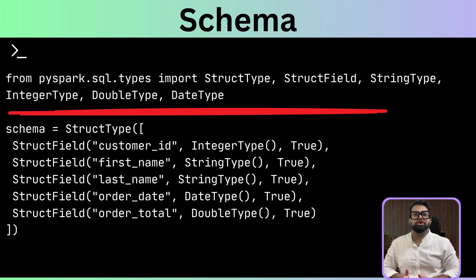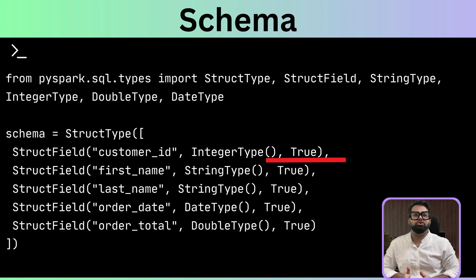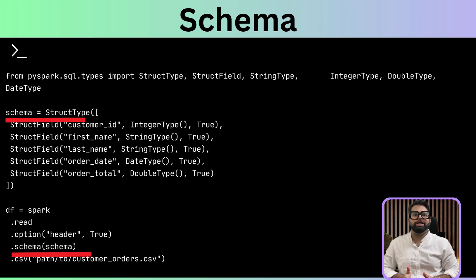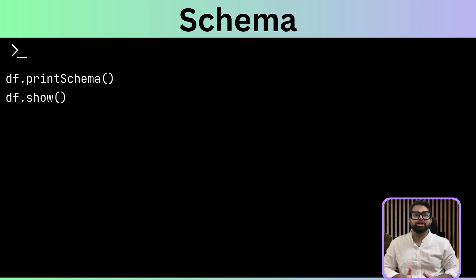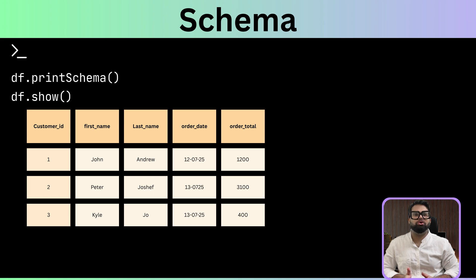A much safer and highly recommended option is to define the schema yourself. An explicit schema is like a contract for your data — it forces the data to be loaded in the exact format you expect. We import all the data types we need: StructType defines the whole DataFrame structure, and StructField defines one column. For each column, we give it a name, a data type like IntegerType or StringType, and a true or false value to indicate whether that column is allowed to have null values. Once the data is loaded, the two important commands are printSchema and show. df.printSchema will print out the schema of your DataFrame so you can quickly check all the column names and their data types. df.show will display the first 20 rows in a nice table — the perfect way to verify everything loaded correctly.